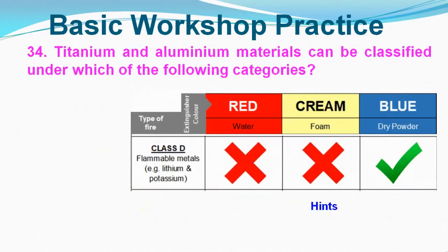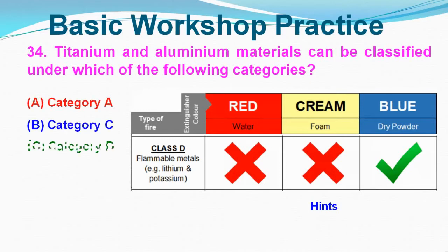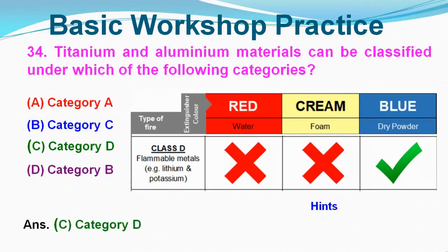Question No. 34: Titanium and aluminum materials can be classified under which of the following categories? Option A: Category A, Option B: Category C, Option C: Category D, Option D: Category B. Correct answer is Option C, Category D.